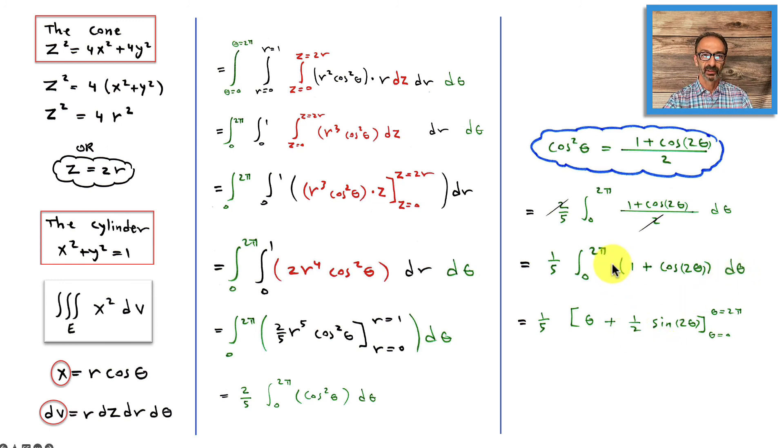The integration of one with respect to theta will give you theta. All I need to do is plug in zero and 2π. Of course, 2π first, but sine 2π is zero and sine zero is zero. So that's 2π, half times zero is zero, minus plug in zero here and plug in zero here - that's going to be zero plus half times sine zero, zero. Everything simplifies to 2π inside and multiply it by one-fifth, and that's 2π over 5. That should do it.